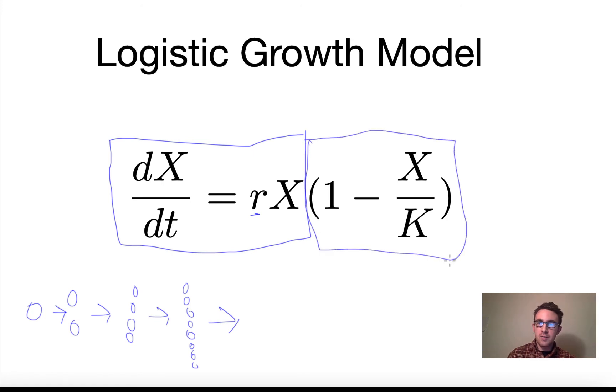This parameter K is the carrying capacity parameter. And so basically this term is saying that as X approaches K, the growth will slow down because this is,